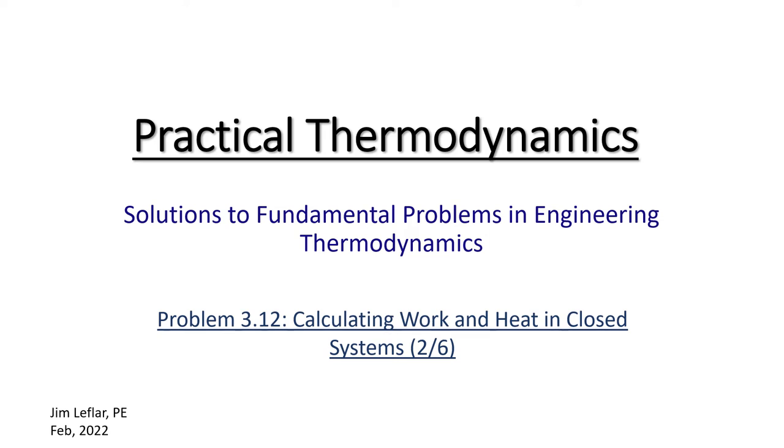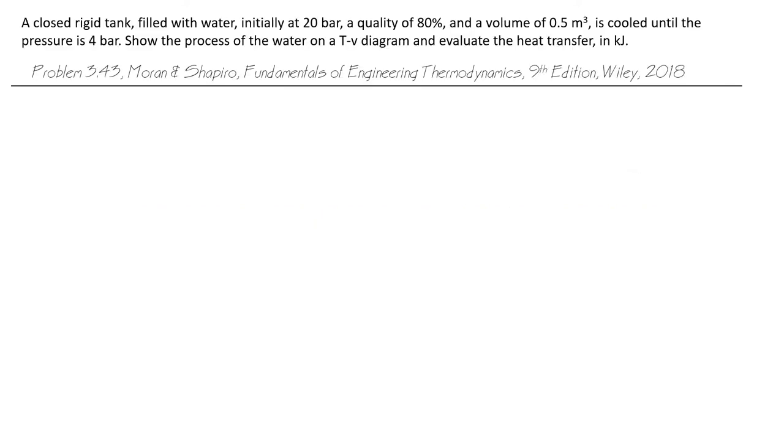Let's solve another thermodynamic problem requiring us to apply an energy balance to a closed system. We are given a closed rigid tank filled with water, initially at 20 bar, a quality of 80%, and a volume of 0.5 cubic meters, and it is cooled until the pressure is 4 bar. Show the process of the water on a T-v diagram and evaluate the heat transfer in kilojoules.